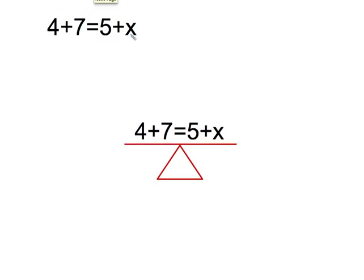So here I have an equation with an unknown amount, the variable 4 plus 7 equals 5 plus x. First thing I want to do is I want to make it as simple as possible. So this 4 plus 7, I'm going to add that up. I know that 7 plus 4 is 11.